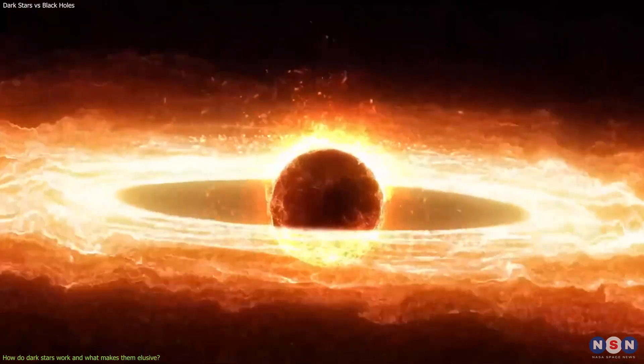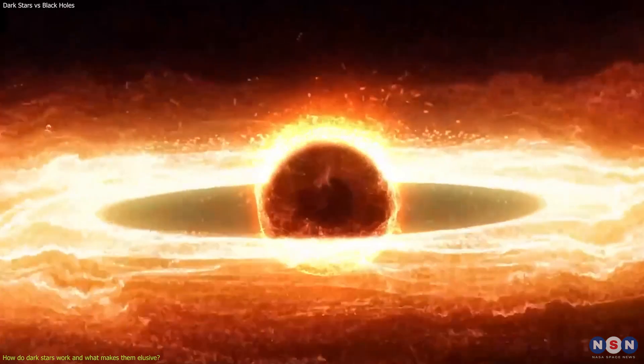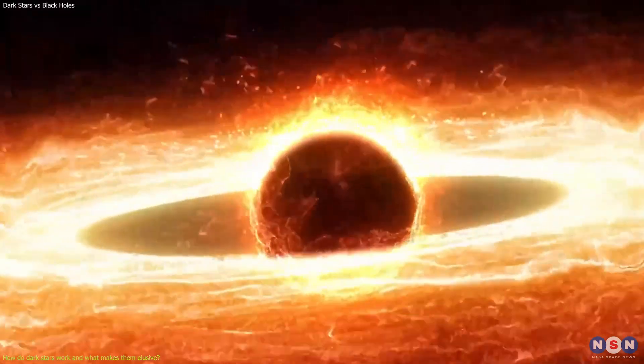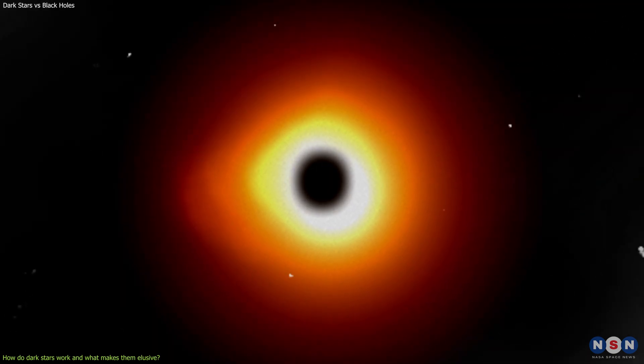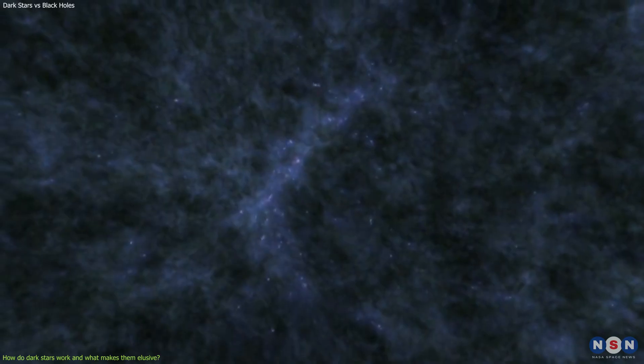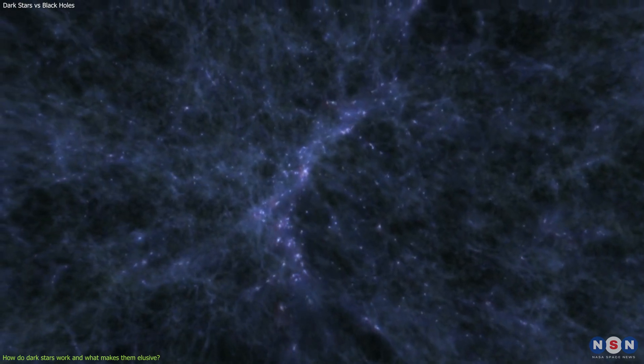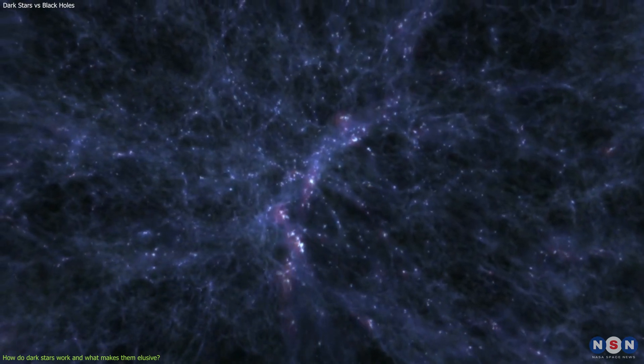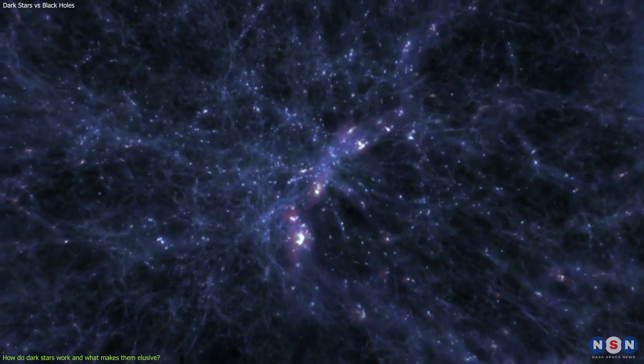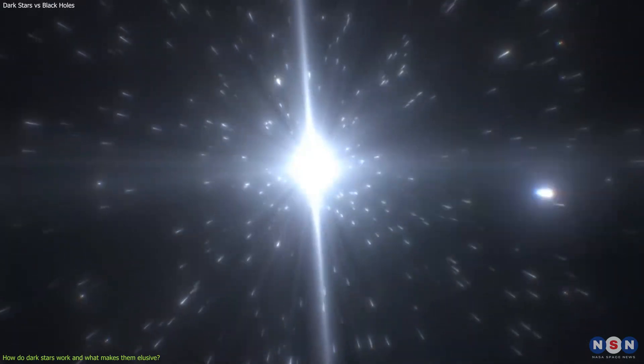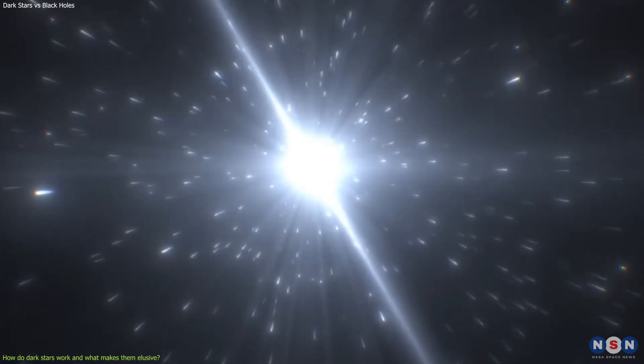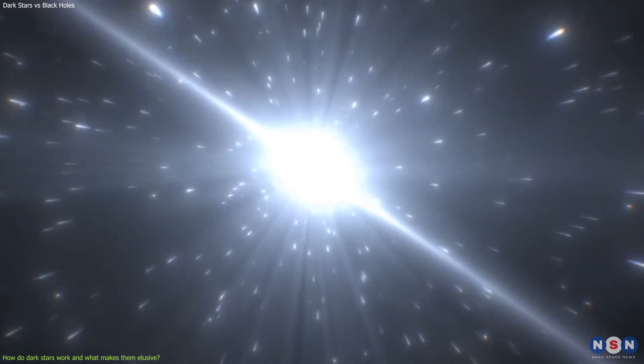This core is a ball of matter that has a radius of about one Planck length and a mass of about one solar mass. This means that it is extremely dense and has a very high pressure and temperature. The pressure and temperature are so high that they overcome the nuclear forces that hold atoms together and create new forms of matter that we do not understand yet. The temperature is also so high that it creates a lot of radiation that escapes from the core.